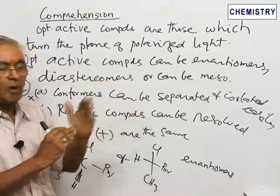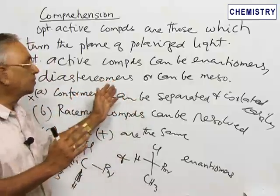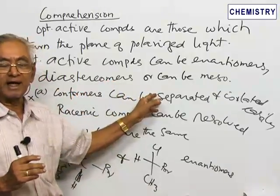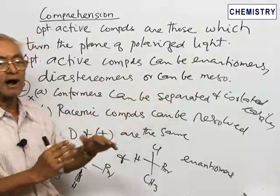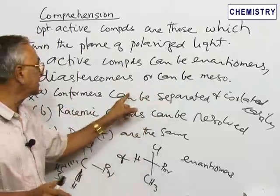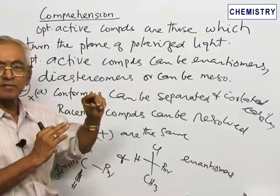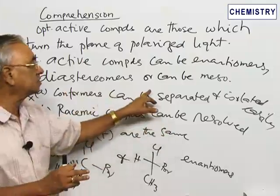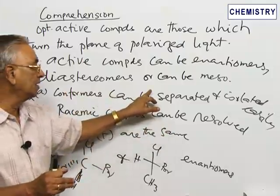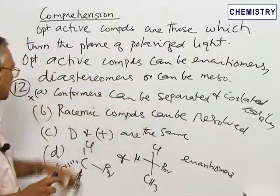By rotating through a small degree, different types of conformers can be obtained and they cannot be easily separated because under ordinary conditions, the energy difference between the conformers will be very small and the small energy difference makes it difficult for us to isolate and separate them individually. Therefore, it cannot be separated. This is not a correct statement.